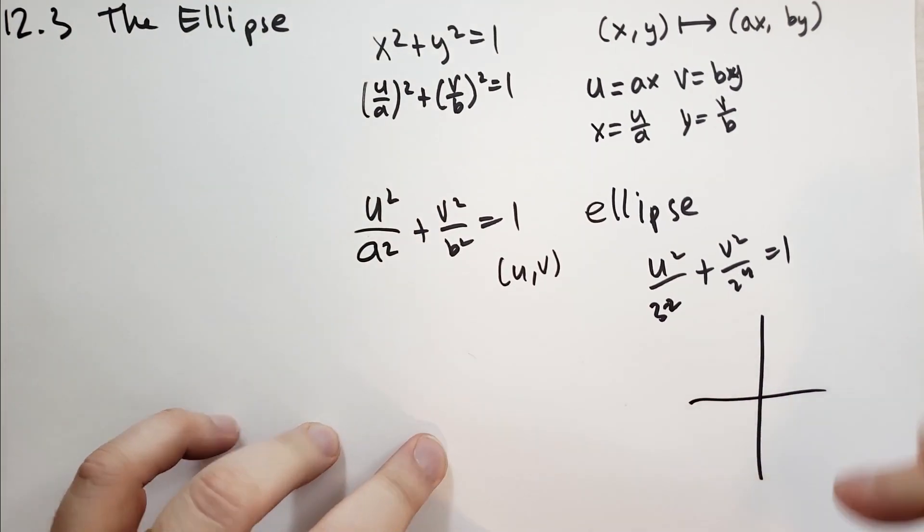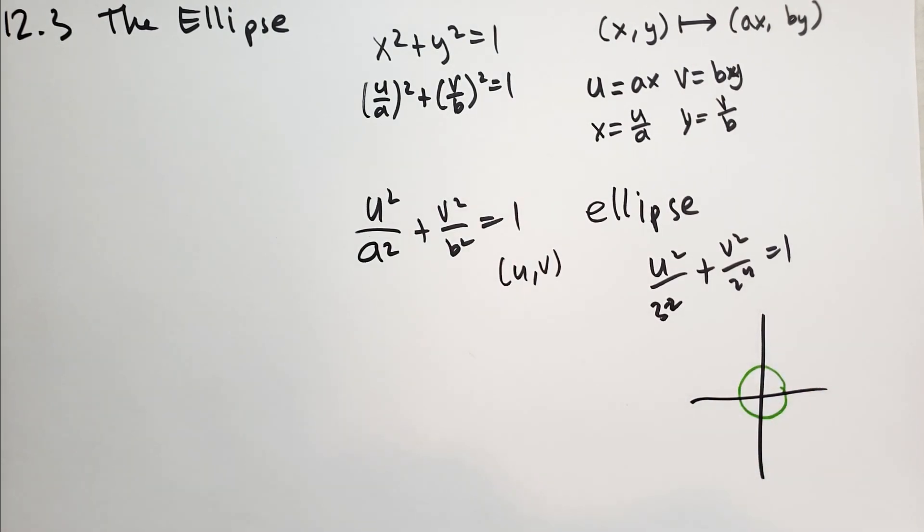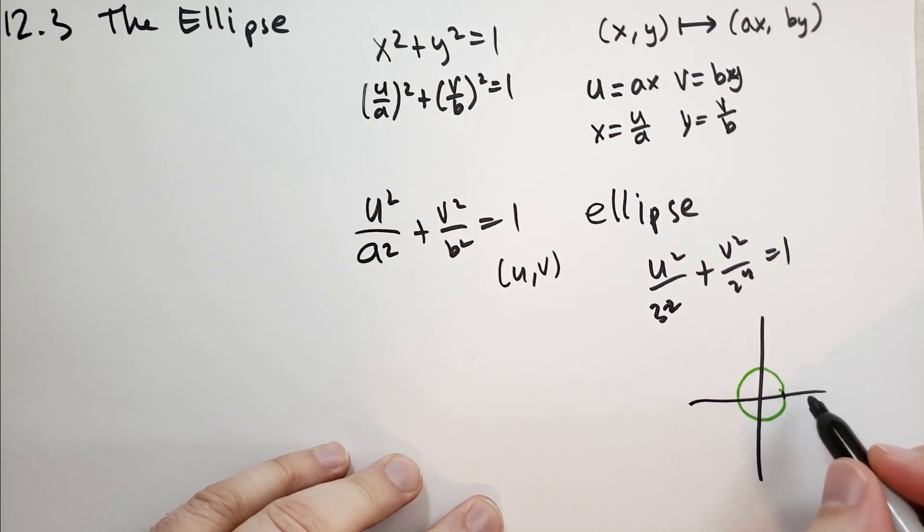So normally we would have just the unit circle. Except in this case, in the x direction, it's going to stretch out 3. So we're going to 1, 2, 3. It's going to go all the way out here. 1, 2, 3. All the way out here.